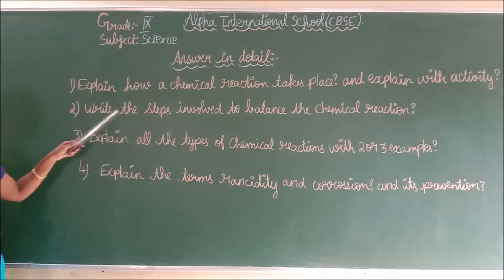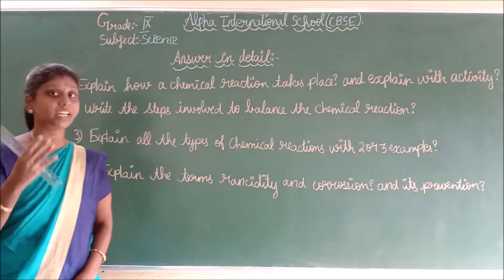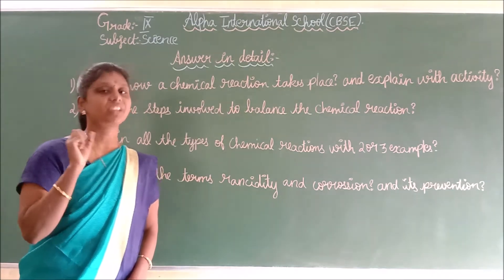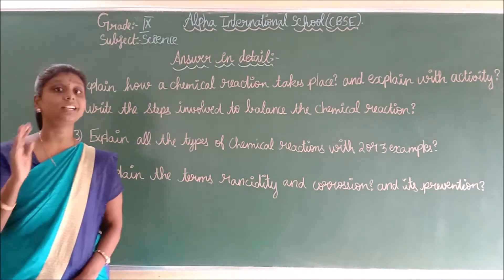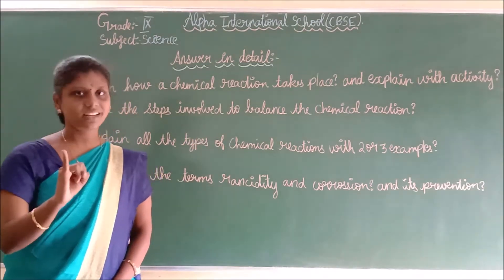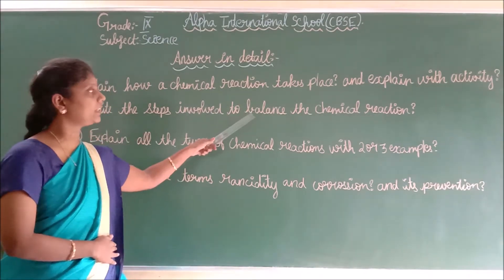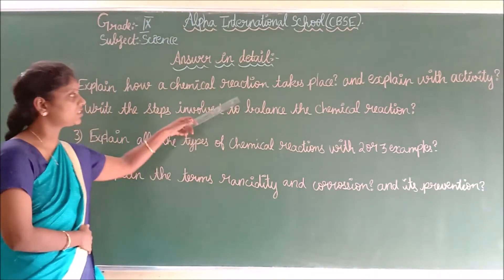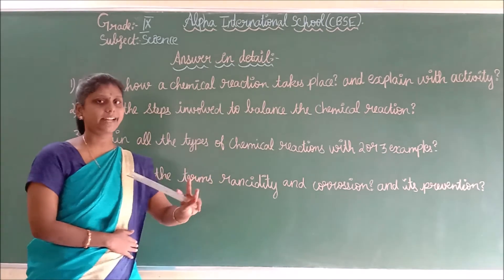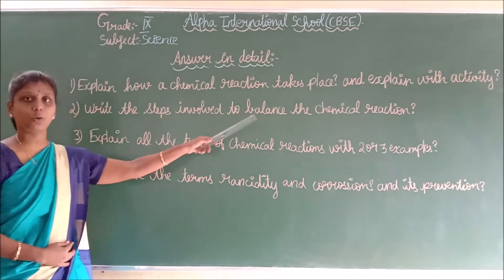Second question: write the steps involved to balance a chemical equation. There are three steps. In the first step, write the unbalanced equation. In the second step, list down the elements present in the reactants and the elements present in the products. In the third step, start to balance the equation.